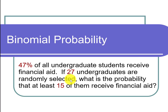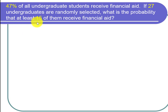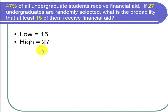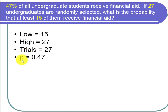Let's write down all the numbers important for the binomial distribution. We want the probability that at least 15 receive financial aid. 'At least 15' means 15 is the smallest number counted as successful — 14 would not qualify. So low equals 15. The highest possible is if all 27 receive aid, so high equals 27. Trials equals 27, and the probability p equals 0.47.